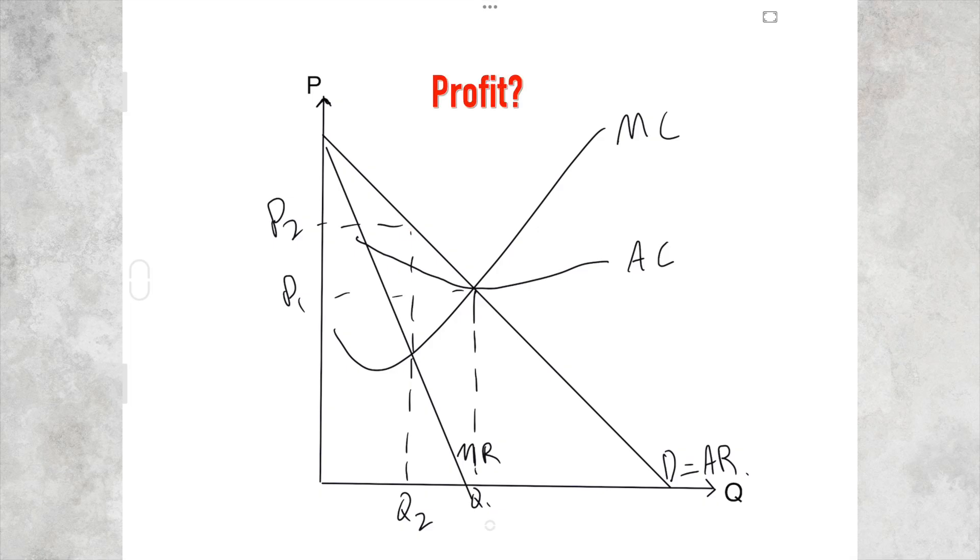Now another question we can ask is how much profit does a firm make? Well, profit is average revenue minus average cost times quantity. So the average revenue they're getting is here, and the average cost in this diagram is there. So supernormal profit is this rectangle here.